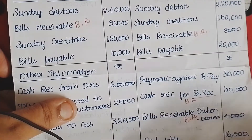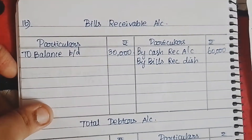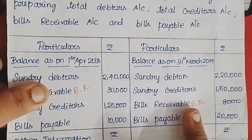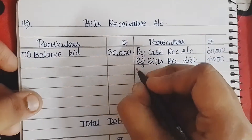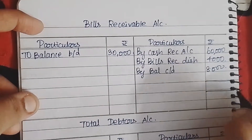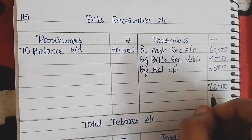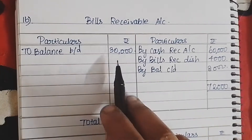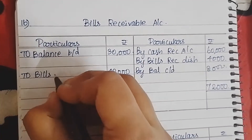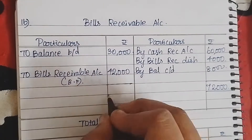Next, bills receivable dishonored — 4,000 rupees. By bills receivable dishonored — 4,000 rupees. Then closing balance of bills receivable on 31st March is 8,000. By balance carry down — 8,000. So adding up: 60,000 plus 4,000 plus 8,000 equals 72,000. Minus the opening balance of 30,000 gives 42,000. So the balancing figure — bills receivable — is 42,000.